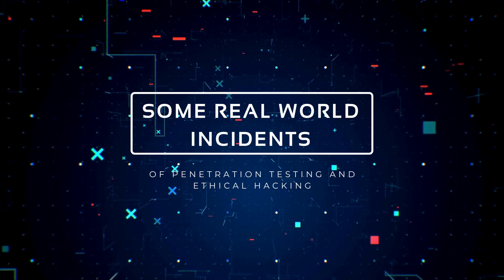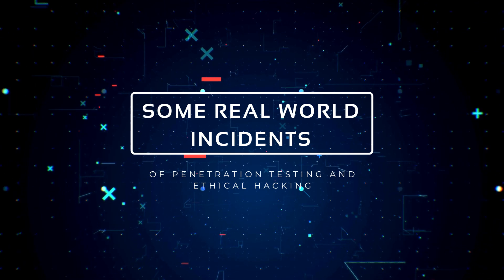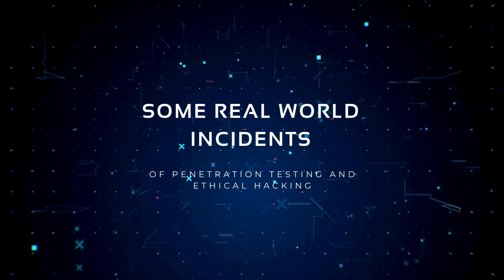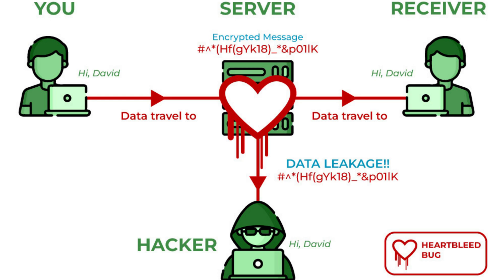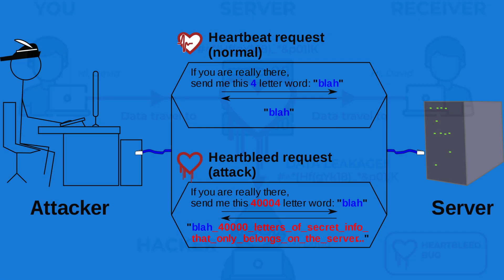Let me share some real-world examples of penetration testing and ethical hacking. The first is the Heartbleed Bug. In 2014, the Heartbleed Bug was a serious vulnerability in the OpenSSL cryptographic software library. It allowed hackers to access sensitive data from the memory of systems protected by affected versions of OpenSSL. The bug was discovered by security researchers and highlighted the importance of regular security audits and penetration testing to identify and fix critical vulnerabilities.